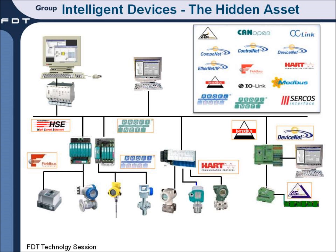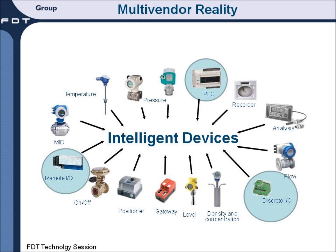Here is a plant network example that shows a variety of intelligent field devices connected to a control or asset management systems using different protocols. Regardless of the field communication protocol, these devices contain information that can be a hidden asset to your operation. Typically there are devices from many different suppliers and many different types of intelligent devices in your facility. The common element is that they are most likely all smart or intelligent devices — so what do they know that you don't know?